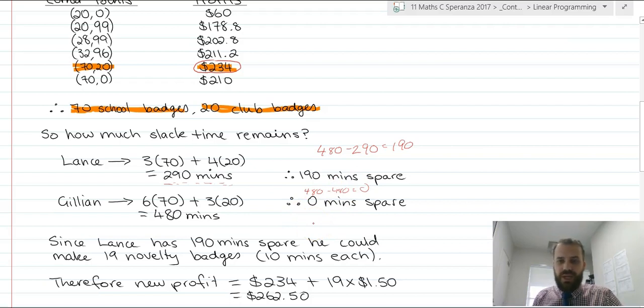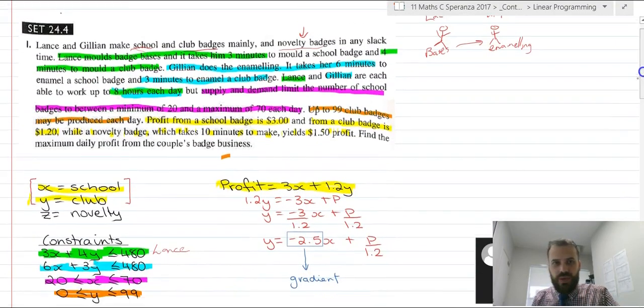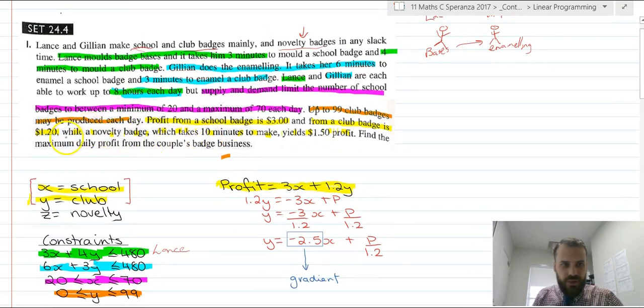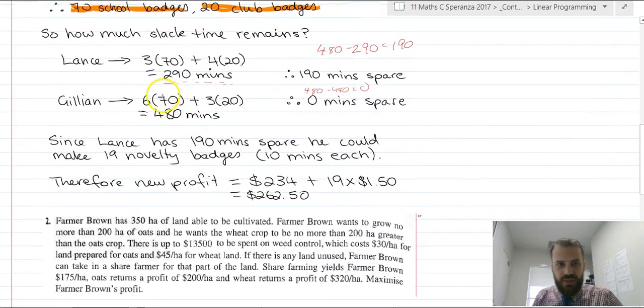She's the one that's job takes a little longer in order to maximize profit. So Lance has 190 minutes spare. He could make 19 novelty badges. That comes all the way back up from here. It says a novelty badge takes 10 minutes to make and yields $1.50 profit. So if he's got 190 minutes, that means he can make 19 badges.